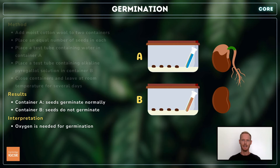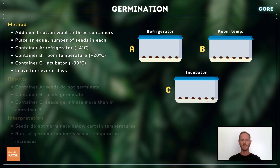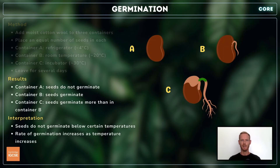This suggests that oxygen is needed for germination. Finally, to investigate the effect of temperature, add cotton wool to three containers and place equal numbers of soaked seeds in all three. Place one container in a refrigerator at around 4 degrees, one at room temperature at around 20 degrees, and one in an incubator at around 30 degrees. Leave for several days and measure the length of the roots and shoots. The seedlings in the warmer container will be more developed than those at room temperature, while the seeds in the refrigerator may not have started to germinate at all. This demonstrates that seeds do not germinate below certain temperatures, and that the rate of germination increases as temperature increases.